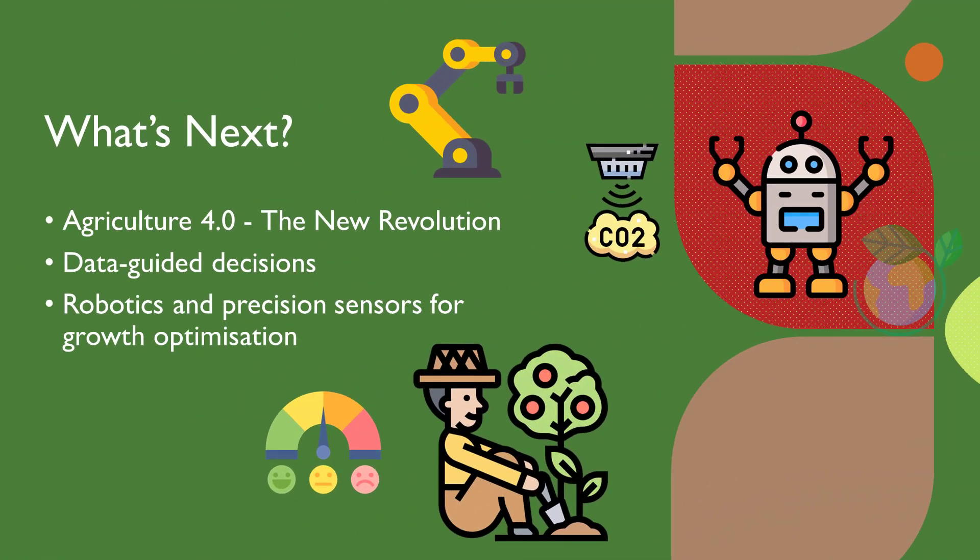According to a report from the Food and Agriculture Organization of the United Nations, the two big drivers of food demand — namely population and income — are on the rise. The world's population is expected to reach 9.1 billion people in 2050, meaning that farmers globally must increase food production by 70% compared to 2007 levels to meet the needs of the larger population.